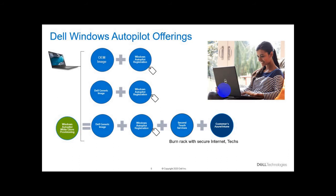The third option is Windows Autopilot White Glove Provisioning, available with the generic image. At Dell's second-touch facilities, we connect the device to a secure internet connection, connect directly to your tenant, and push the profile for that user group to the device. When the user receives it, it is already pre-configured with the applications you have defined in that user profile.